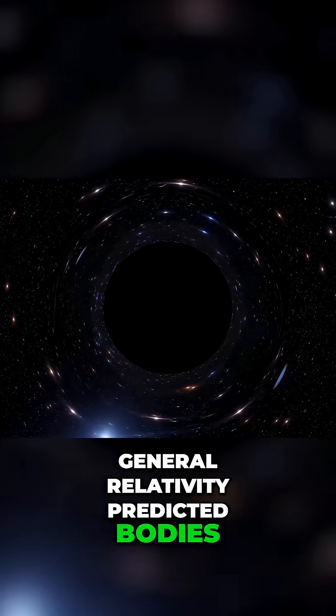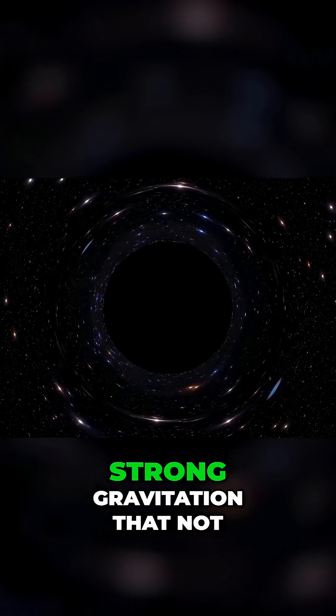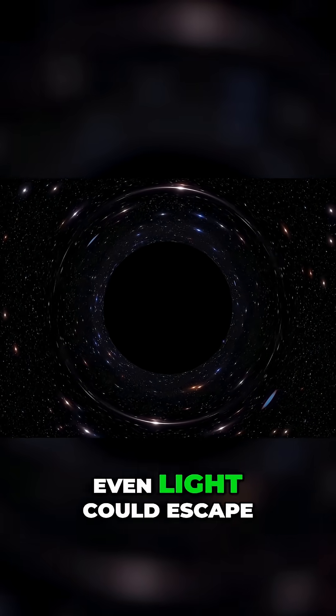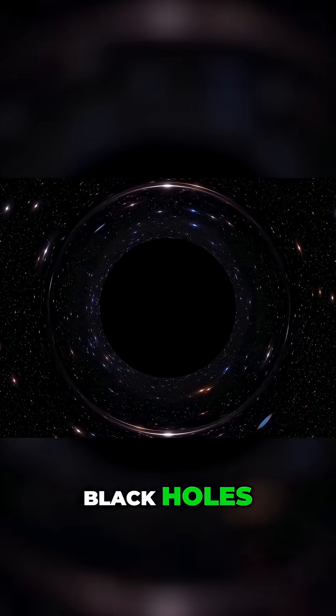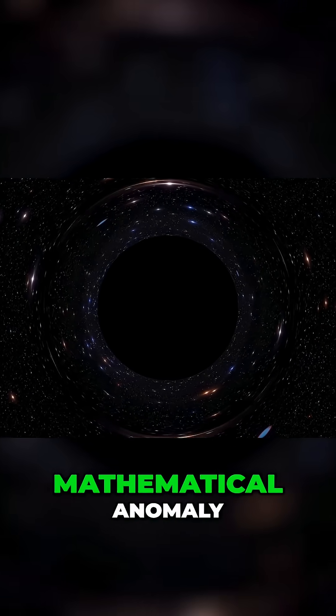General relativity predicted bodies so massive with such strong gravitation that not even light could escape from them. They were called black holes, and at first they were regarded as a mathematical anomaly.